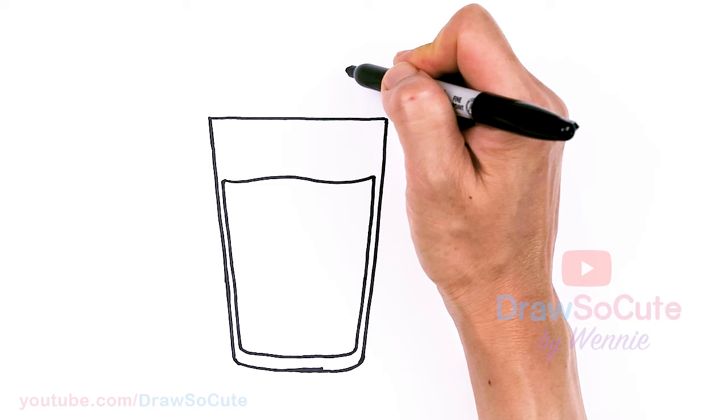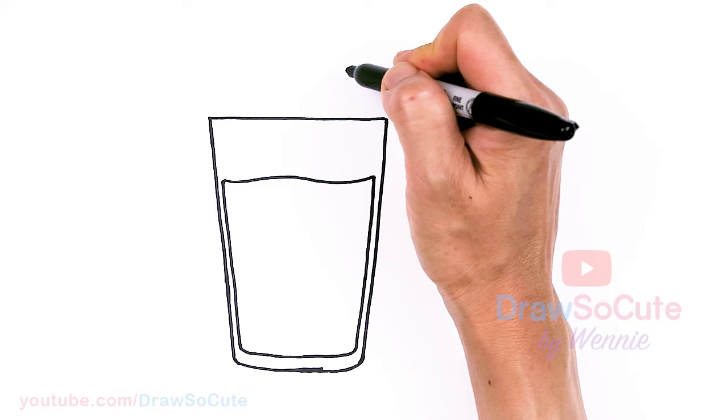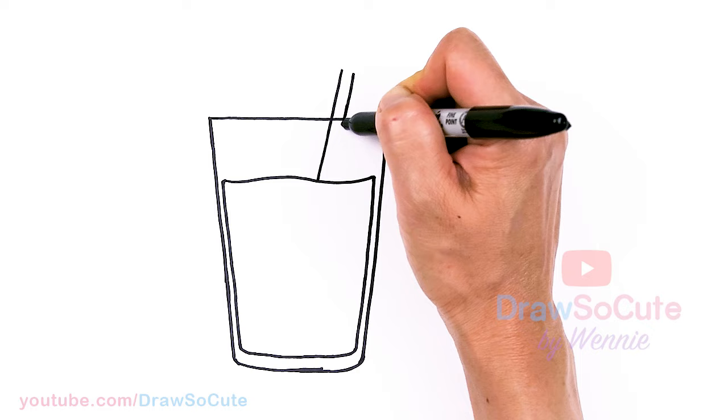So now that I have my juice in, we definitely need a straw, right? So if you want to draw a straw, let's come about right here. And I'm just going to angle a line in, in here.